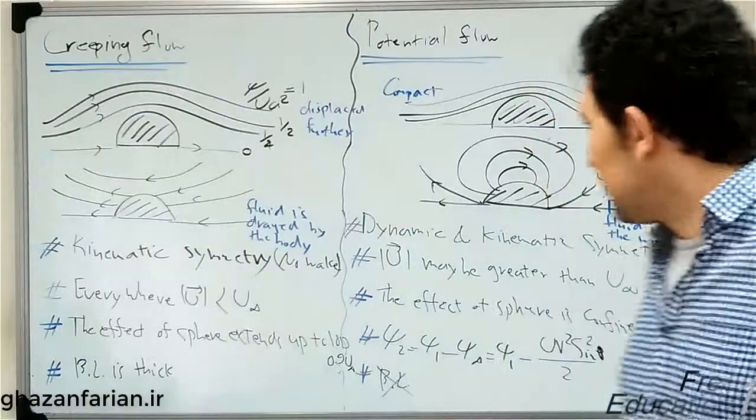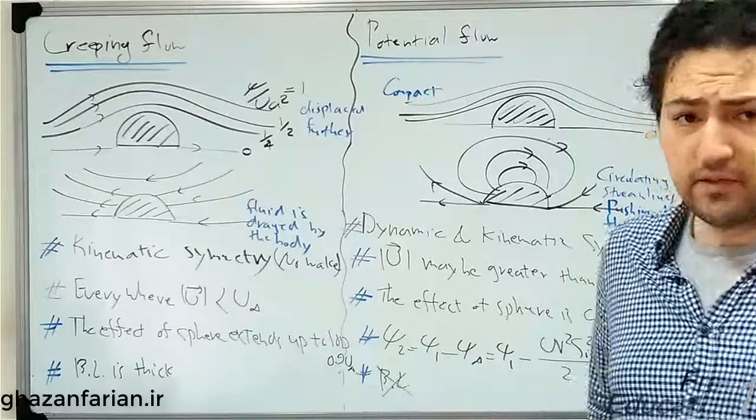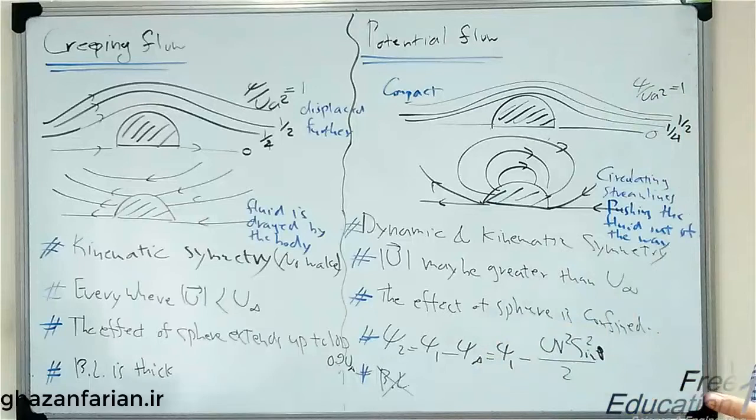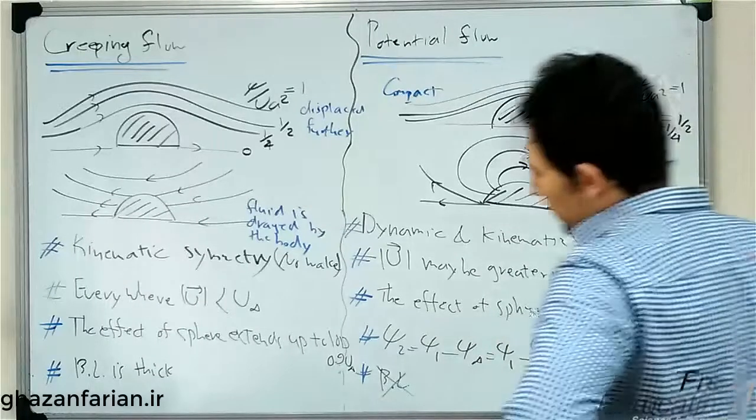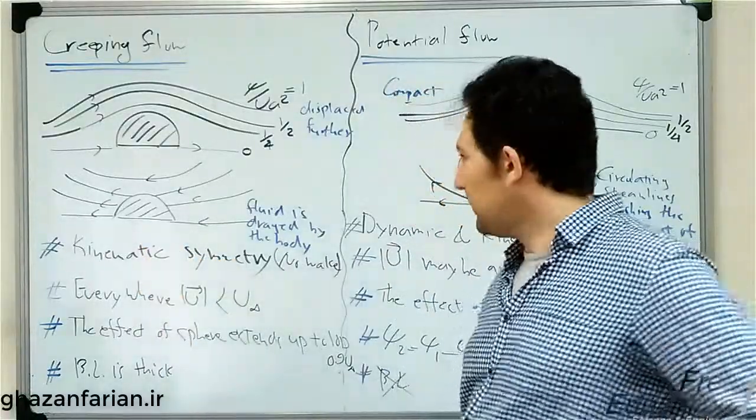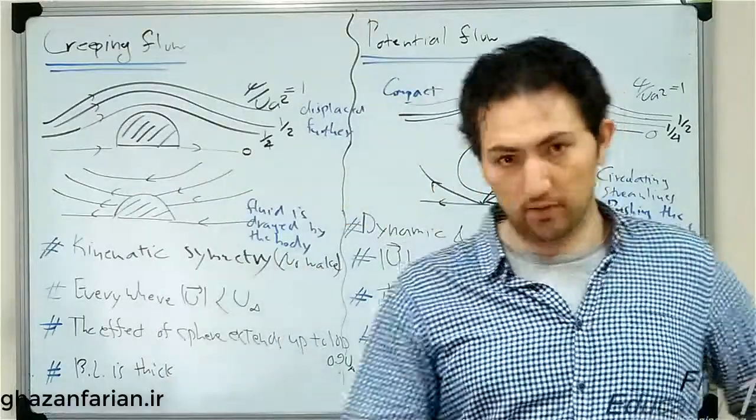There is a sketch with respect to an observer which moves with the sphere, something similar to the Lagrangian frame or Lagrangian viewpoint. The coordinate here is attached to the moving body, but here the coordinate is fixed at the ground.